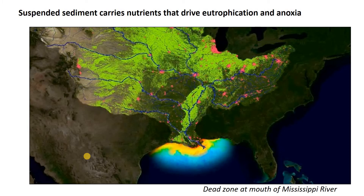Also, small suspended particles tend to be very reactive. They can bond to nutrients like phosphorus and nitrogen and actually carry them efficiently downstream. So wherever we see high suspended load, we're often going to see high nutrient loading as well. As shown in this example from the Mississippi River Delta, where the Mississippi brings down sediment and nutrients from throughout America and drives eutrophication, anoxia, and eventually what we call a dead zone in the Gulf of Mexico, where creatures cannot live because there's no oxygen. Understanding suspended sediment helps us understand problems like this.